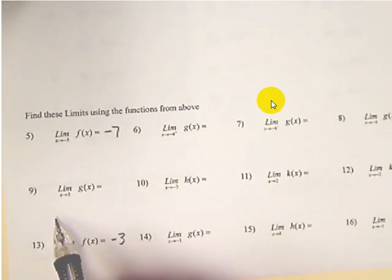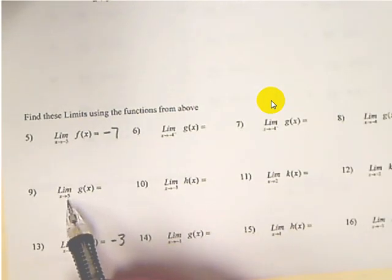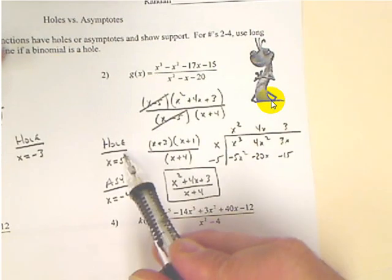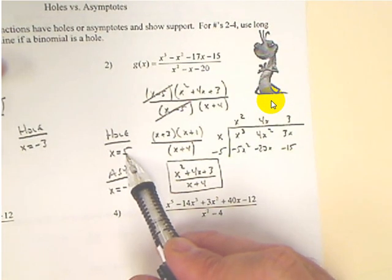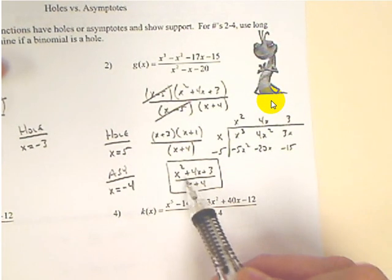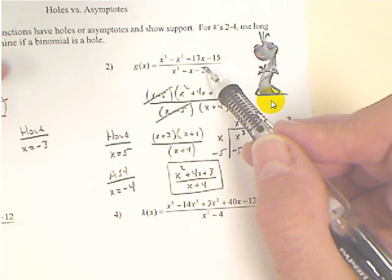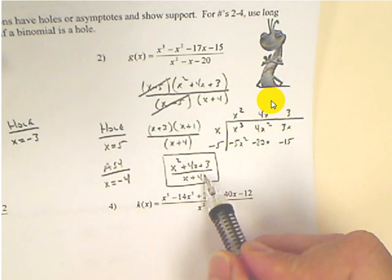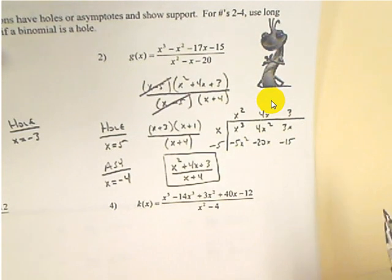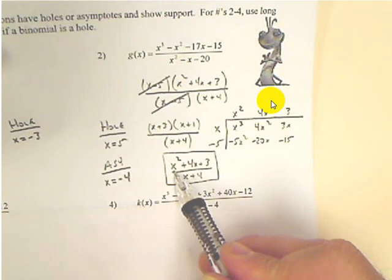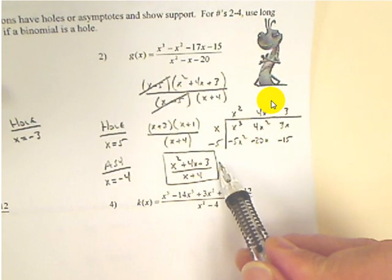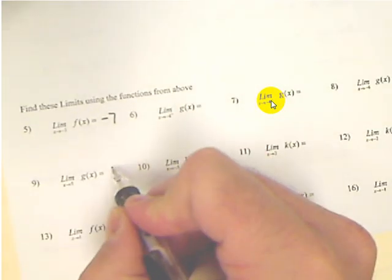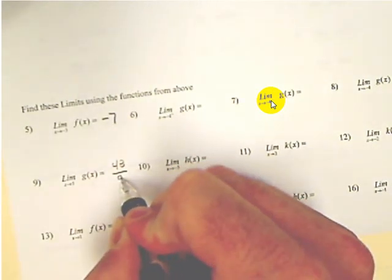If we go to number 9, number 9 says find the limit as x approaches 5. What's happening at 5? It was the hole. How do you find the limit at a hole? We plug the x value into the equation, the one with the hole taken out. If we use the original equation, we'll get an error. But we can plug 5 into these remaining x's. We can probably do that in our head. We have 5 squared is 25, 25 plus 20, 45 plus 3 is 48, 48 over 9. I am out of time.